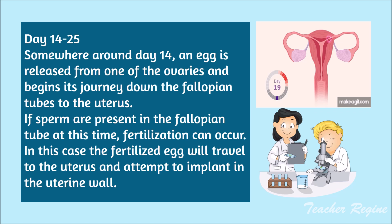Days 14 to 25: somewhere around day 14, an egg is released from one of the ovaries and begins its journey down the fallopian tubes to the uterus. If sperm are present in the fallopian tube at this time, fertilization can occur. In this case, the fertilized egg will travel to the uterus and attempt to implant in the uterine wall.